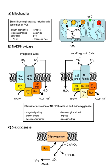Reactive oxygen species are chemically reactive chemical species containing oxygen. Examples include peroxides, superoxide, hydroxyl radical, singlet oxygen, and alpha oxygen.